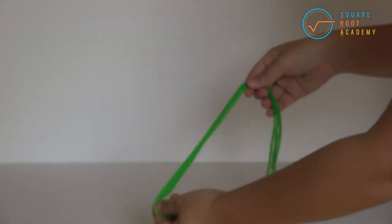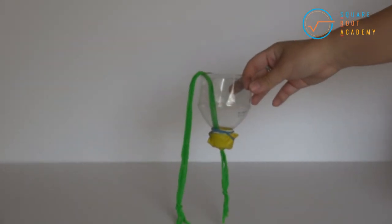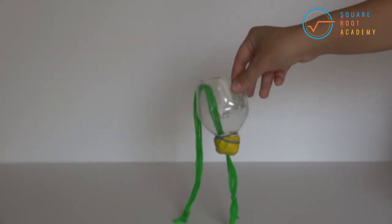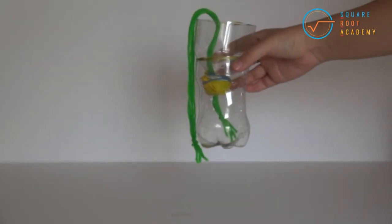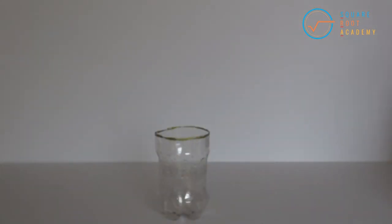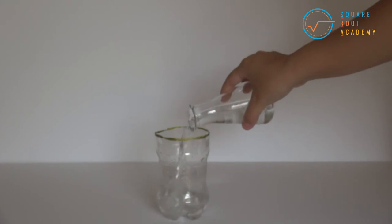Cut an 18 inch length of thick yarn. Feed the yarn through the slit in the balloon, leaving a few inches of tail to hang from the top. Turn the top of the bottle upside down and place it in the bottom of the bottle. Remove the top of the planter and fill the bottom halfway with tap water before putting the top back on.